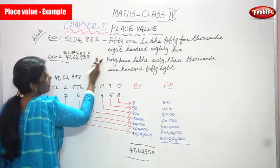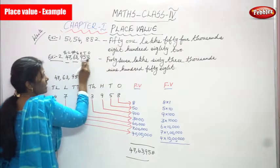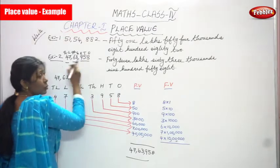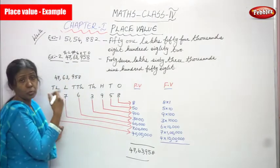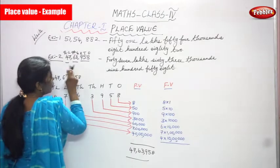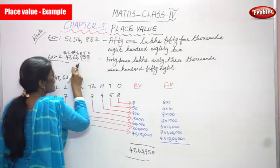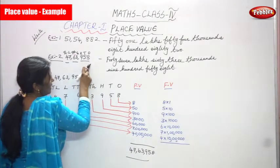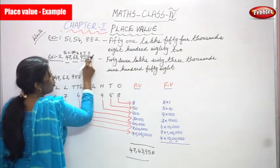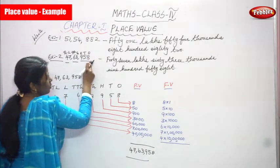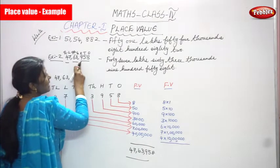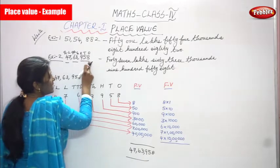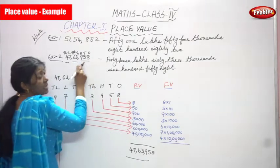To read the number, you put a comma starting from the right — the last three digits form the ones period. After that, put a comma for every two digits. So reading 47 lakhs 63,958: ones place is 8, tens place is 5, hundreds place is 9 — that gives nine hundred and fifty-eight.